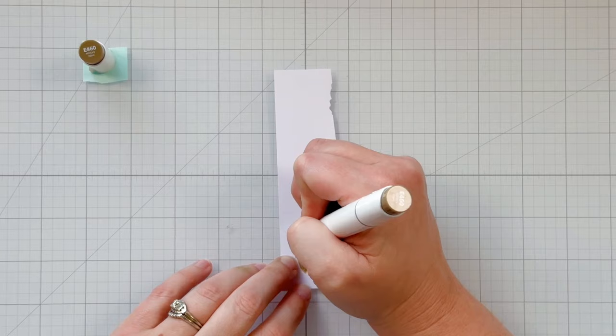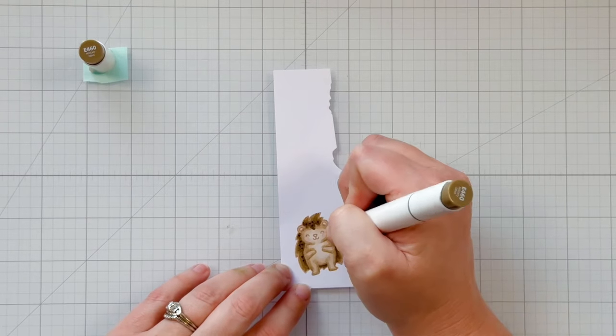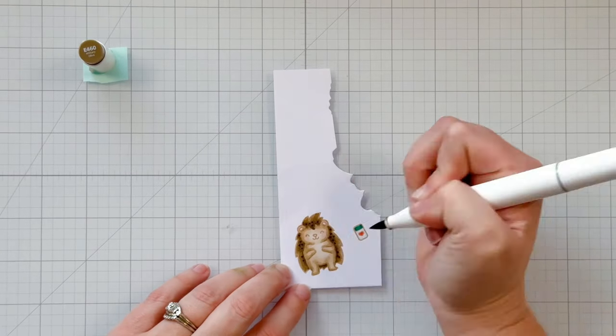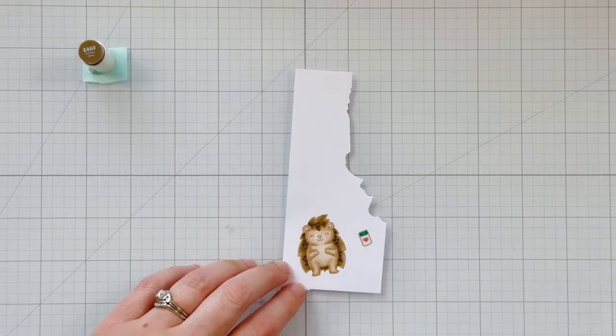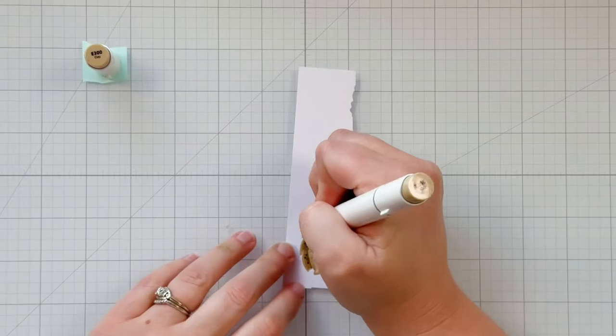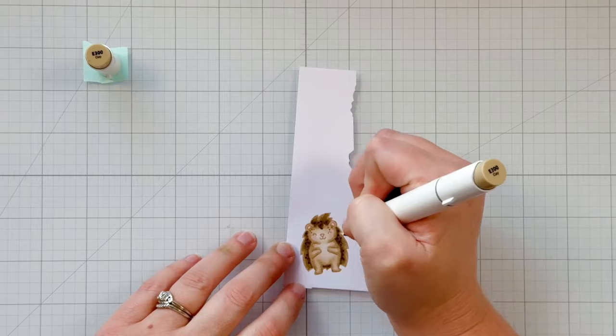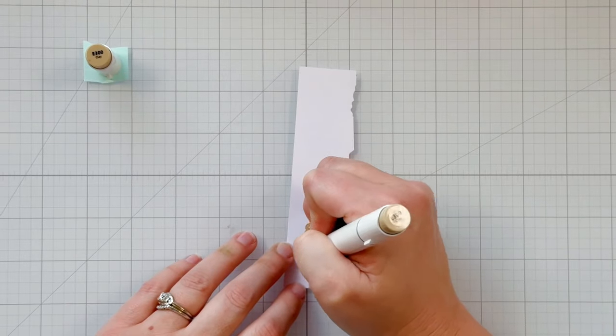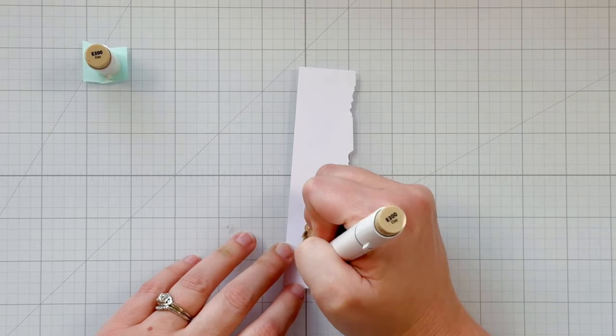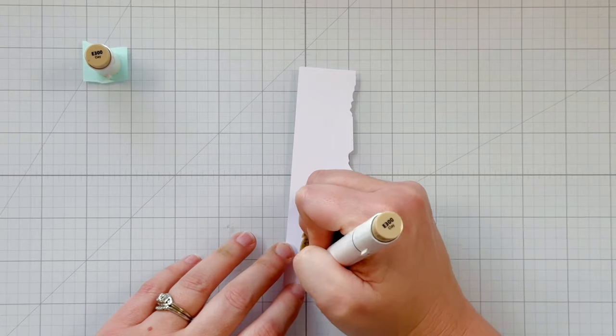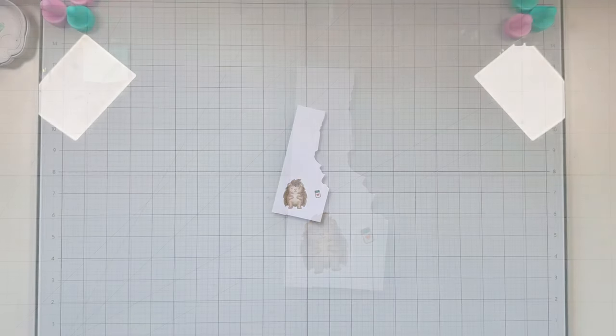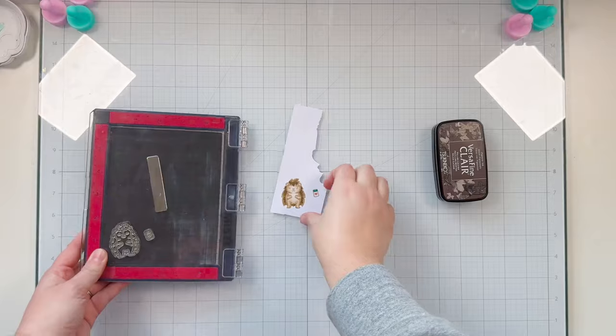To give it a little more character I'm bringing back in the two darkest colors that I used. So E460 to add a little bit of speckling around the quills of the porcupine and E300 around the regular fur of my porcupine.